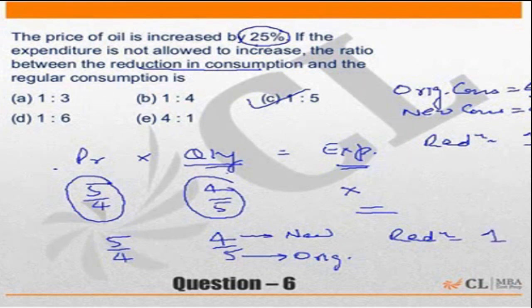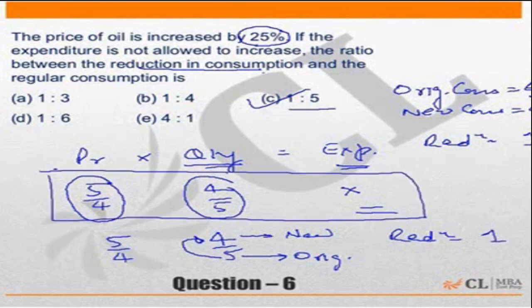So instead of 5, we are consuming 4 units, so you reduced it by 1 unit. The ratio of reduction in consumption to regular consumption is 1 is to 5, but the key thing is this particular relationship.